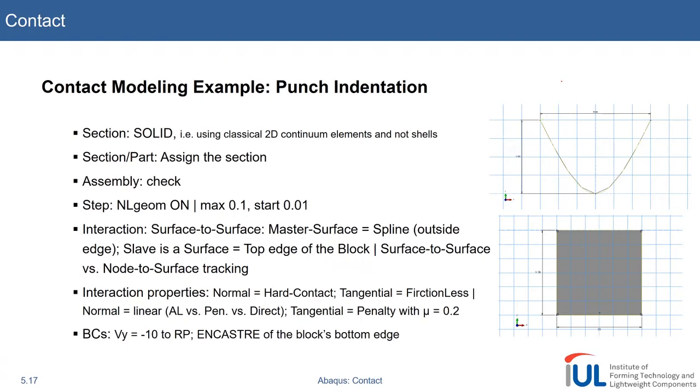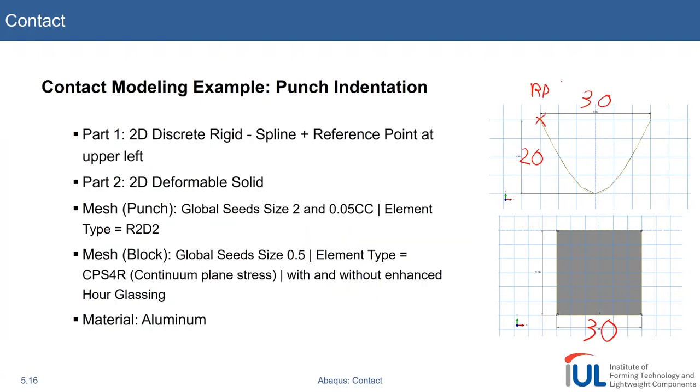We will use some different global seedings to show the effect of coarse mesh versus fine mesh. And we will, for the first time, take a look at the curvature control, which influences how many nodes are placed on a specific curvature.